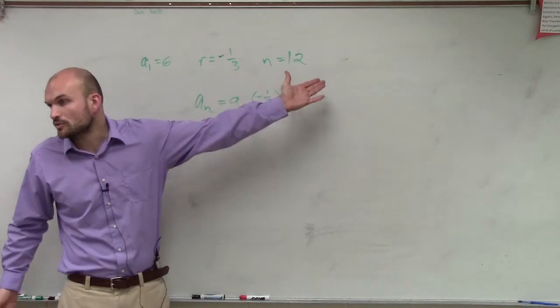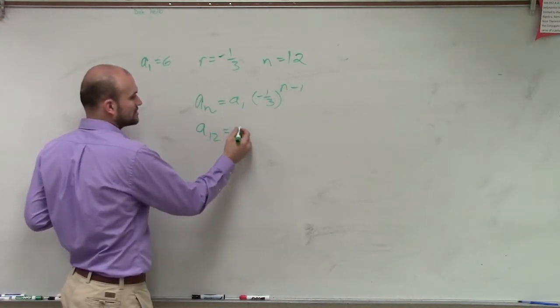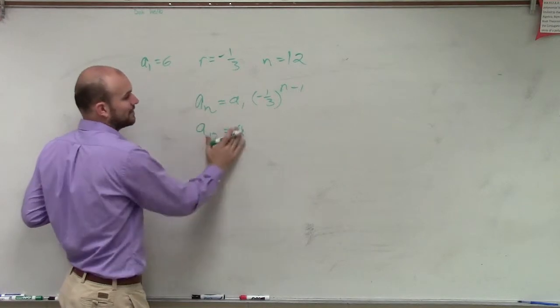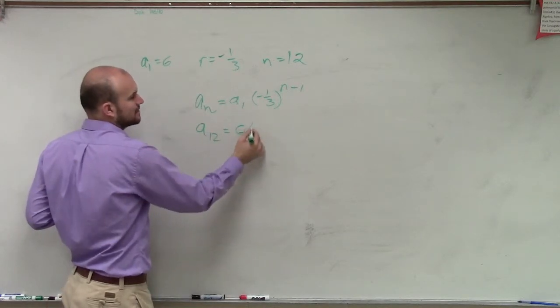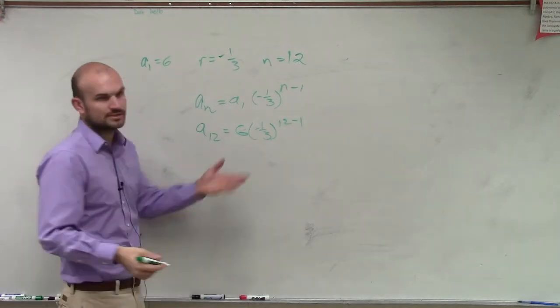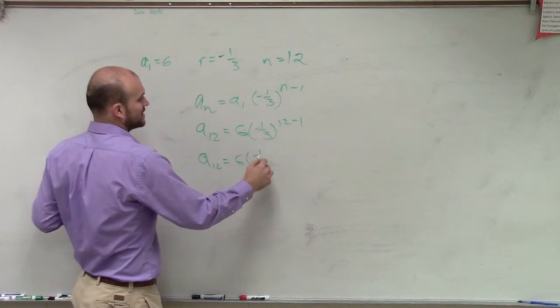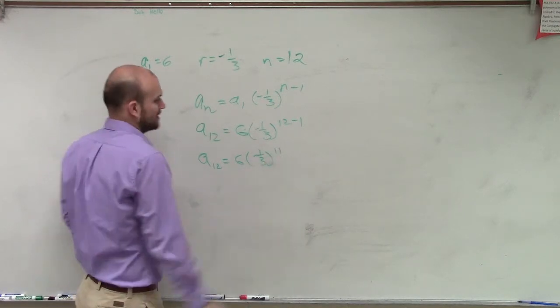So obviously, we want to find our 12th term. So we want to find a sub 12 equals a sub 1, which we now know is actually 6, times negative 1 third times 12 minus 1, which is 11. So a sub 12 equals 6 times negative 1 third, raised to the 11th power.